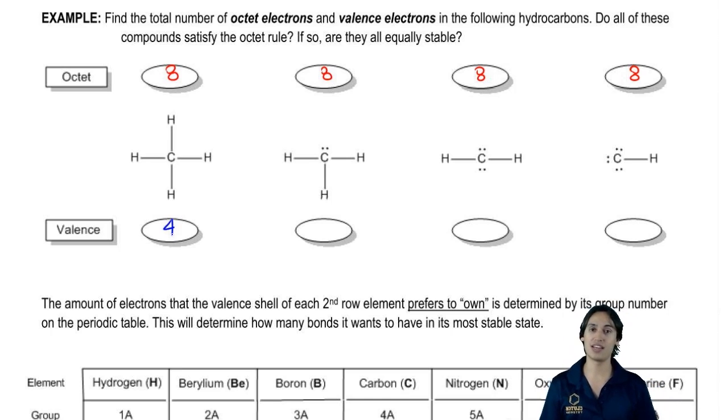All right. The next one. How many dots does it have? Two. How many sticks does it have? Three. Two plus three is five.